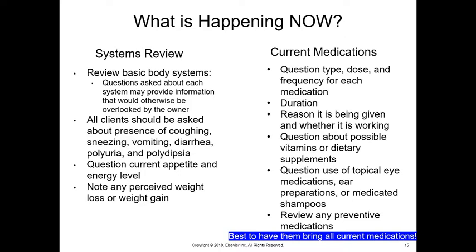A dog that has vomiting and diarrhea caused by parasites will have coughed a couple of days to a couple of weeks beforehand, because in the life cycle of the parasite they're coughing up larvae from the lungs, swallowing them back down, and then the larvae cause problems in the intestinal tract. Those little bits of information can be super important. We're also going to question current appetite and energy level, and note any perceived weight loss or weight gain.